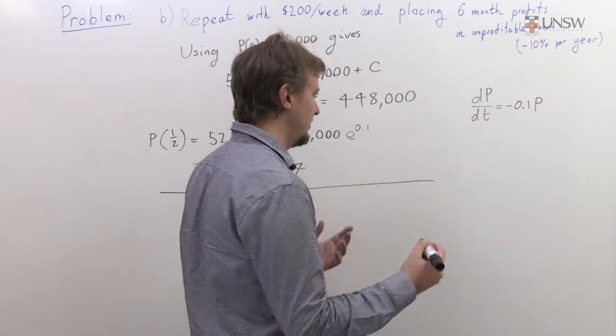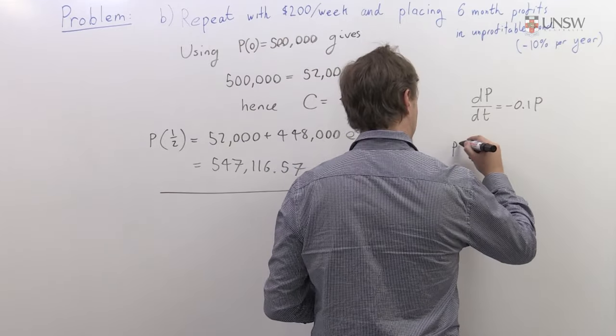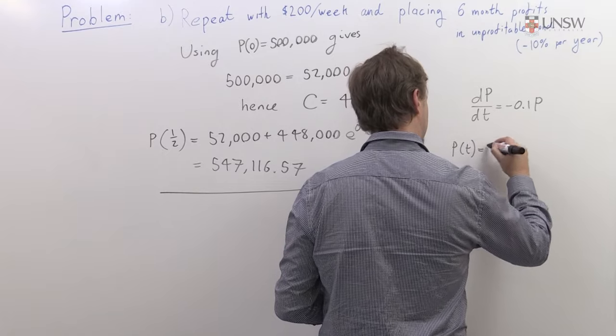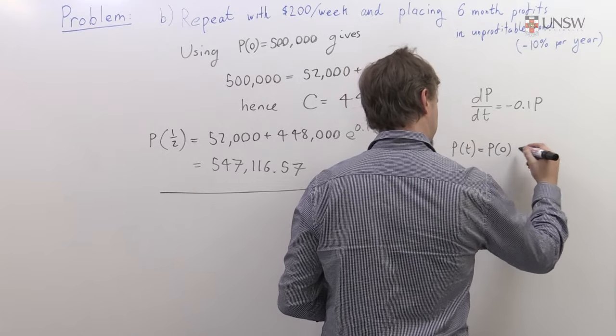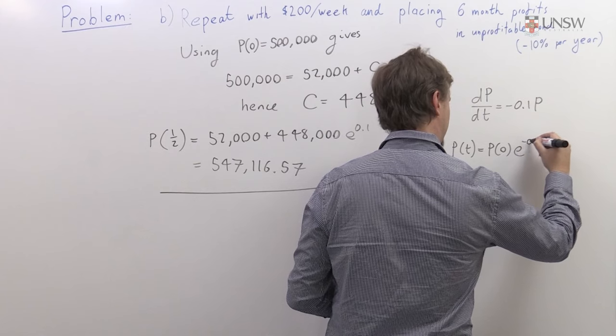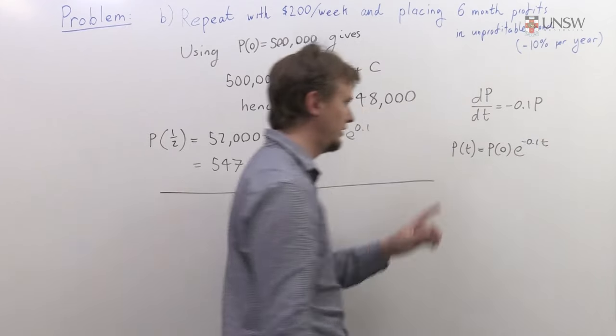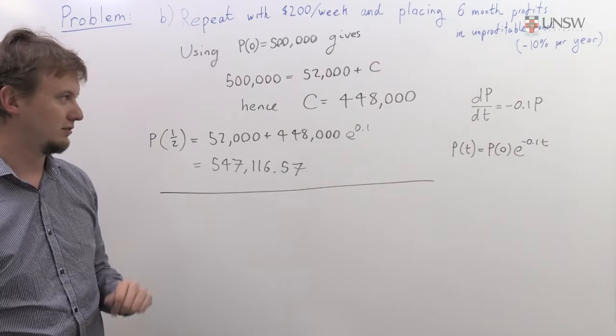If you actually think about it, the solution for this is going to be quite simple. It's going to be P(t) equals P naught e to the minus 0.1t. You can easily verify that is the correct solution.